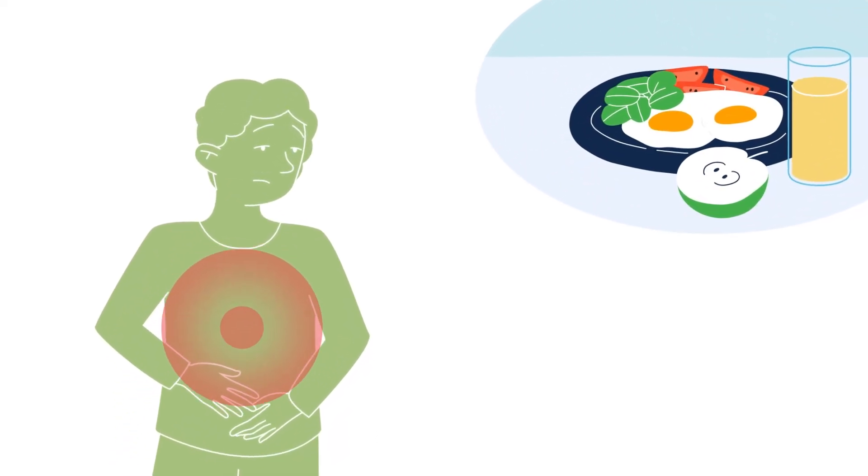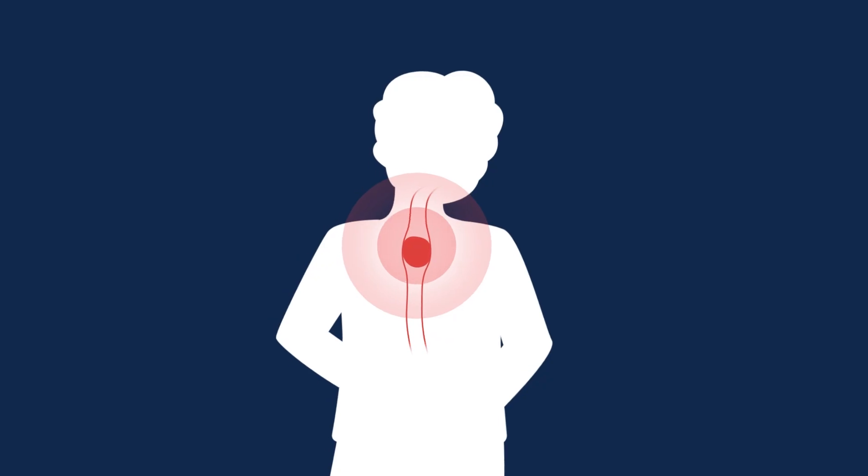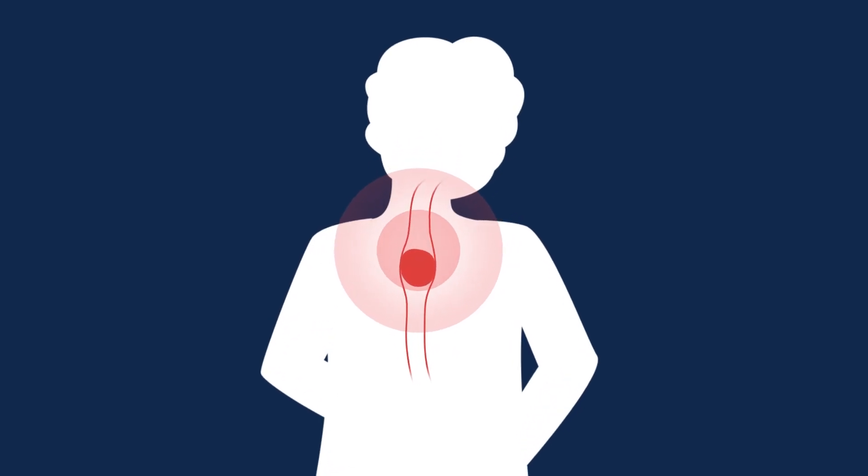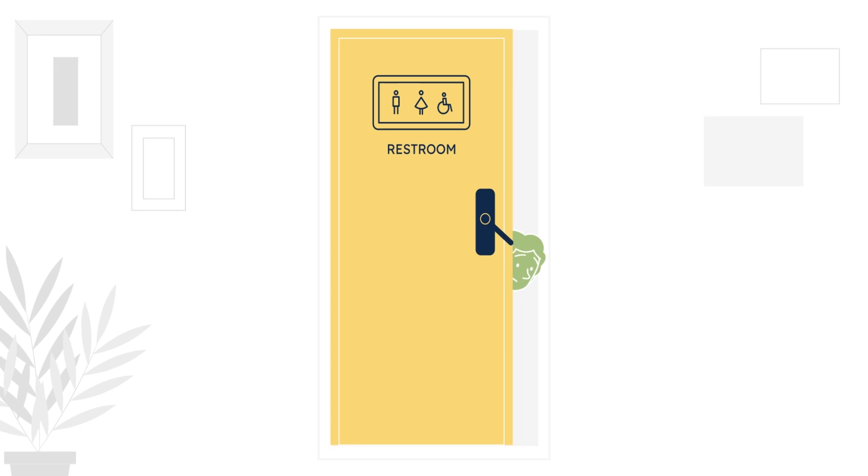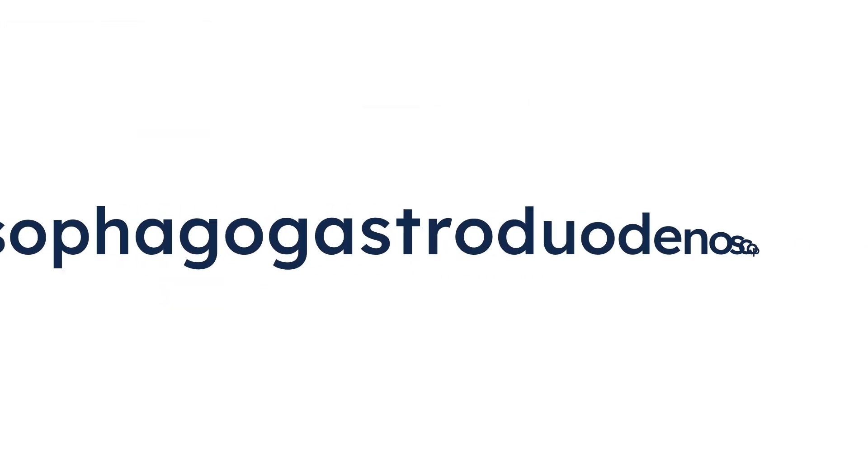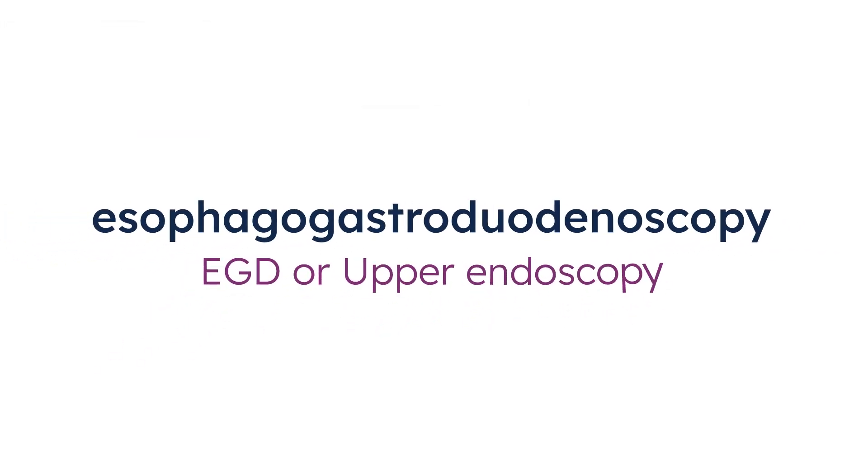For example, if you're experiencing pain or bloating in your stomach after eating, or if it feels like food's getting stuck in your chest, or if you're having trouble using the bathroom, you might need an esophagogastroduodenoscopy, also called an EGD, or upper endoscopy.